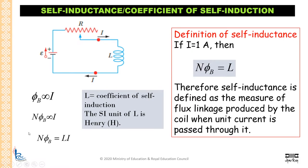We can now define self-inductance from this equation. Suppose the current flowing in the circuit is 1 ampere — then I is replaced by 1, so we have N phi B is equal to L. Therefore, self-inductance can be defined as the measure of flux linkage produced by the coil when unit current is passed through the coil.